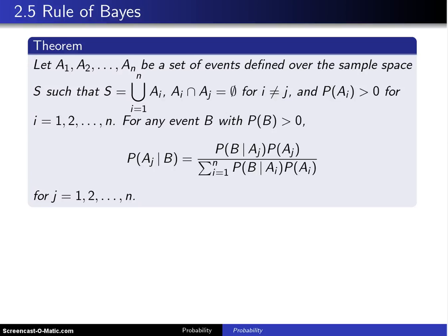Section 2.5 is the Rule of Bayes, and the Rule of Bayes is named after the Reverend Thomas Bayes, who lived from 1701 to 1761. This particular result is so well known that it has actually created a separate area of statistics known as Bayesian statistics and had quite an impact over the years.